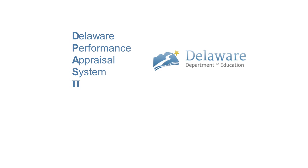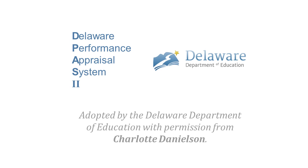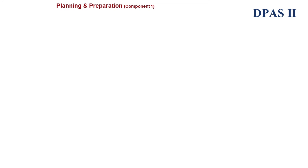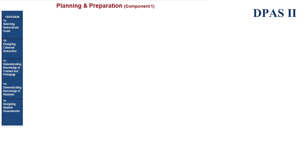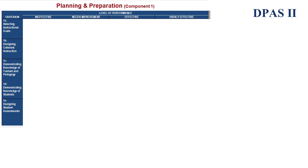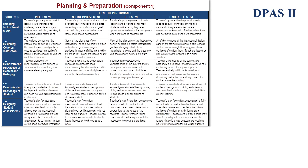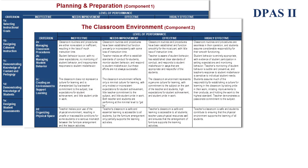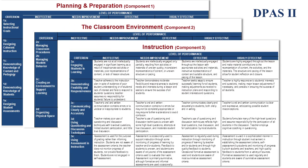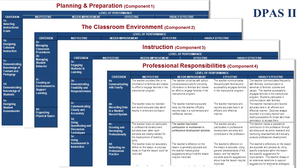One way to take a look at the impact on teacher performance is through the lens of the Delaware Performance Appraisal System, provided by the Delaware Department of Education and through the work of Charlotte Danielson. Each of the four initial components of the DPAS II rubrics has Criterion and Level of Performance. The four components include planning and preparation, the classroom environment, instruction, and professional responsibilities.